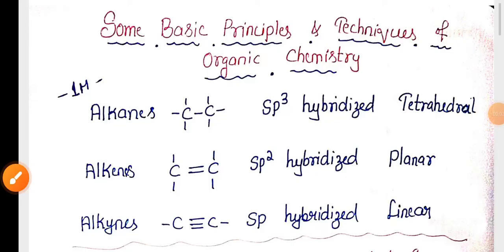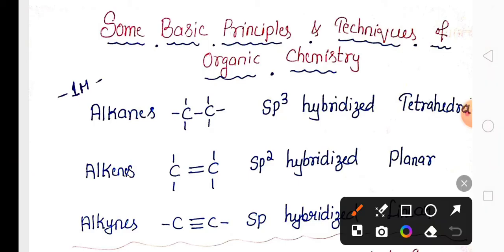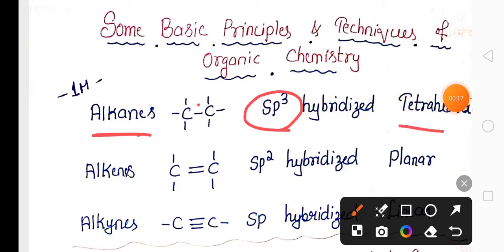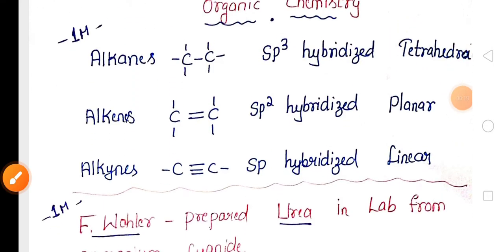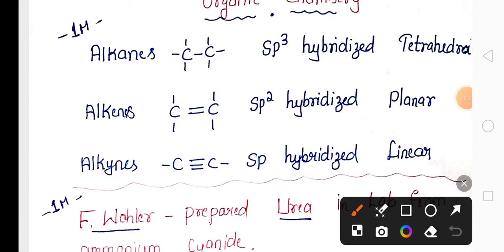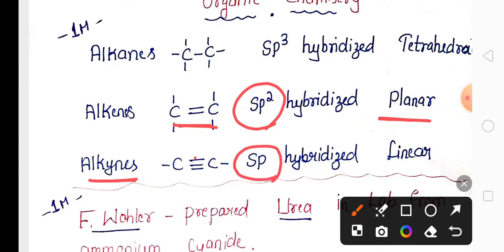First PUC Chemistry — some basic principles and techniques of organic chemistry. This video covers some important topics for the exam. In alkanes, there is a carbon-carbon single bond and the hybridization of the carbon atom is sp3, with a tetrahedral structure. In alkenes, there is a carbon-carbon double bond, hybridization is sp2, and the structure is planar. In alkynes, there is a carbon-carbon triple bond, hybridization is sp, and the structure is linear.